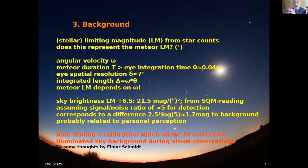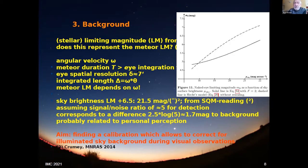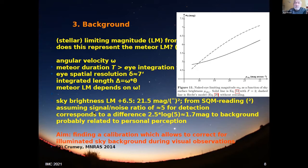If we think about the relations we face: for a normal background with a limiting magnitude of about 6.5 — that's the reference value — that corresponds to 21.5 magnitudes per square arc second. I have a graph for that from the paper by Crumey in Monthly Notices 2014, which deals with visual observing through telescopes but the basic things are of course the same. We cannot see a meteor that is right at the background, so we need some signal-to-noise ratio; assuming a ratio of five for successful detection of meteors, this corresponds to a difference of about 1.7 magnitudes to the background.